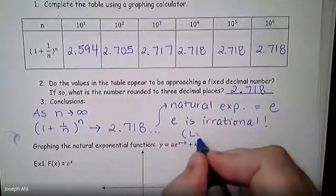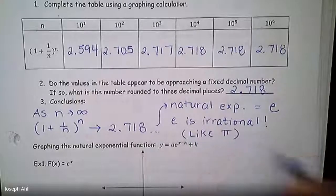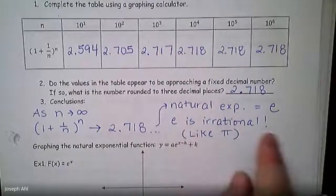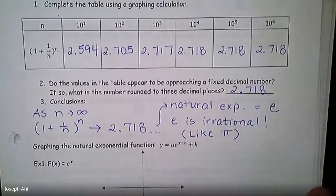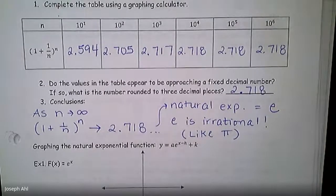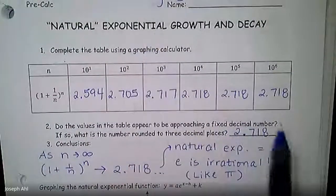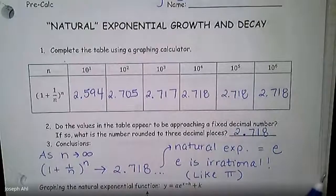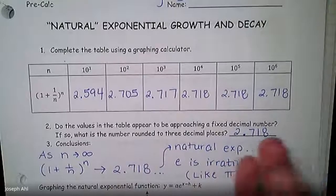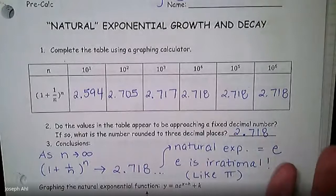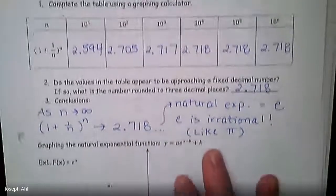Kind of like the very famous irrational number pi. So it's a decimal that doesn't end, doesn't repeat. And this natural exponent is used in examples of maybe population growth. When we say a population grows naturally, we would actually use a base e exponential model to represent that. We'll see e used in other contexts as well, including financial applications.